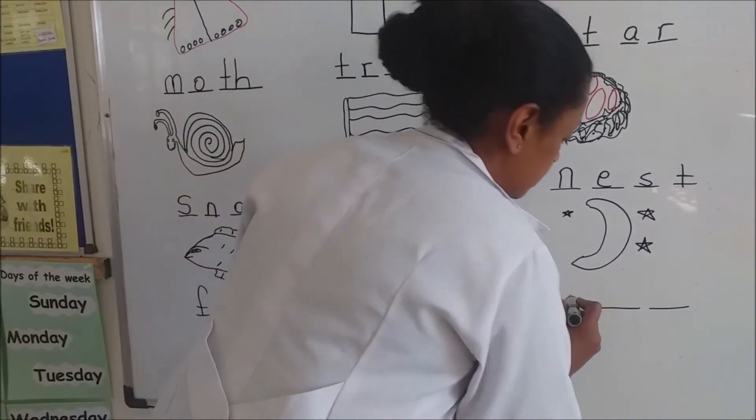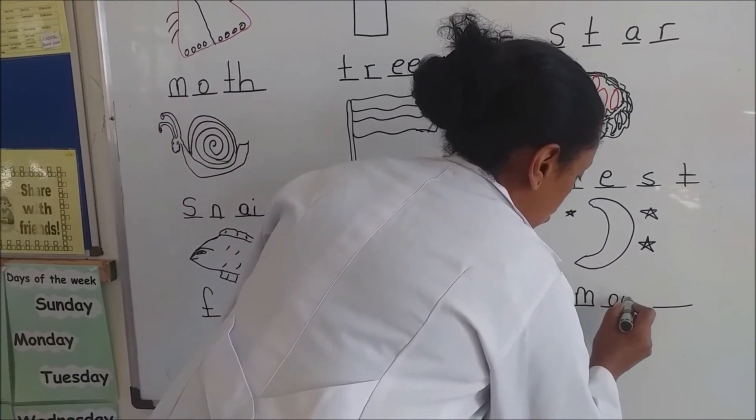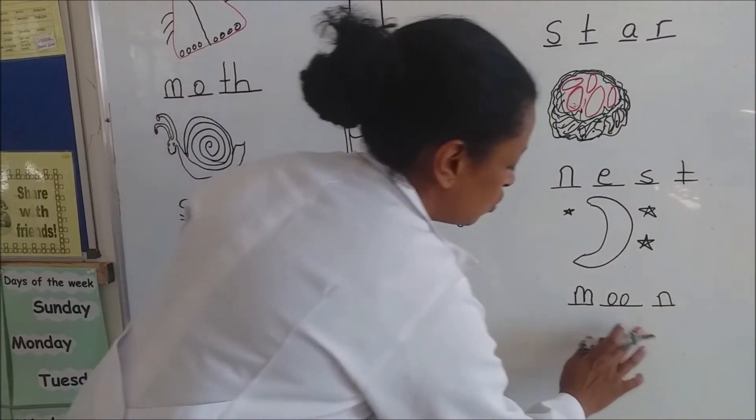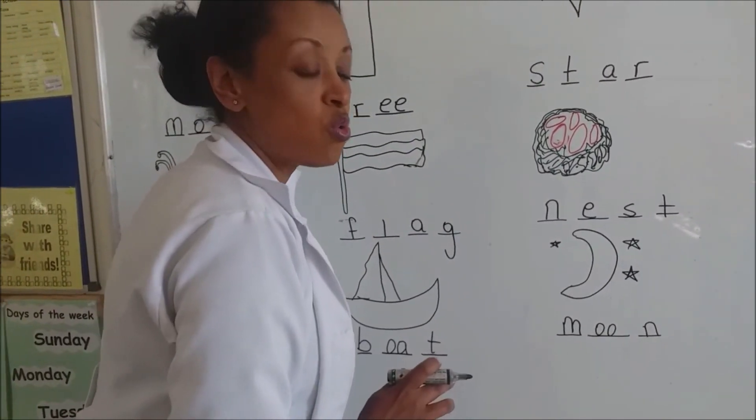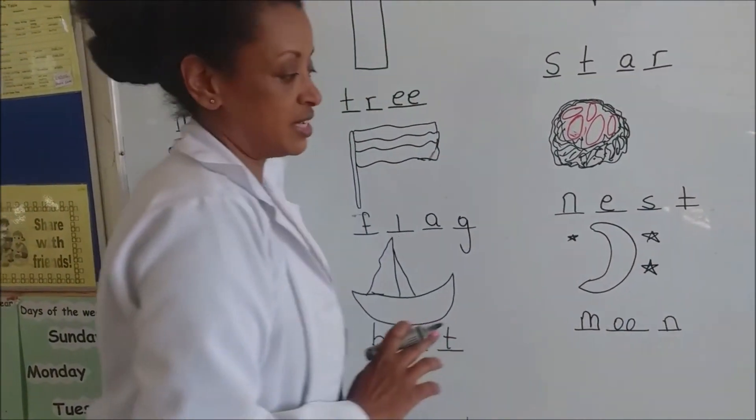This is a moon. Moon. M-O-O-N. Moon. And also this OO, it gives us the U sound. Moon. Excellent.